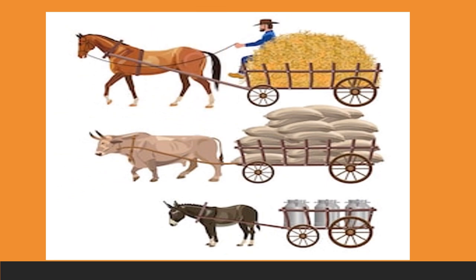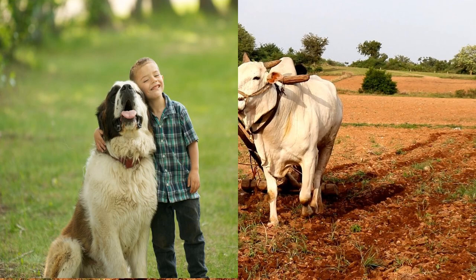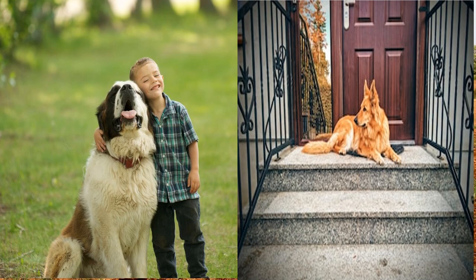What is this, children? Have you seen these carts? These are the horse carts, camel carts, bullock carts, and donkey carts. Some animals carry load and draw carts for us. Bullocks help the farmers in ploughing the fields. The dog is a faithful animal. It guards our home and protects our house.